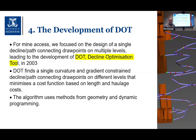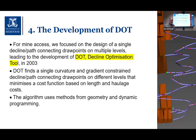This led to the development of our second software tool, DOT. For mine access, we focused on the design of a single decline or path connecting draw points — the points connecting to individual ore levels on multiple levels. This can be thought of as the backbone of a mine: the main declines that trucks use to access the ore bodies.